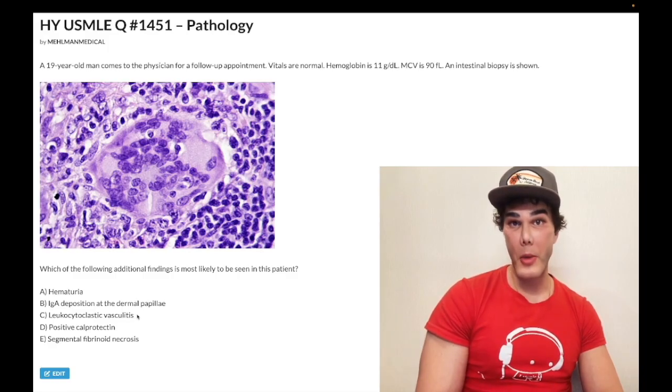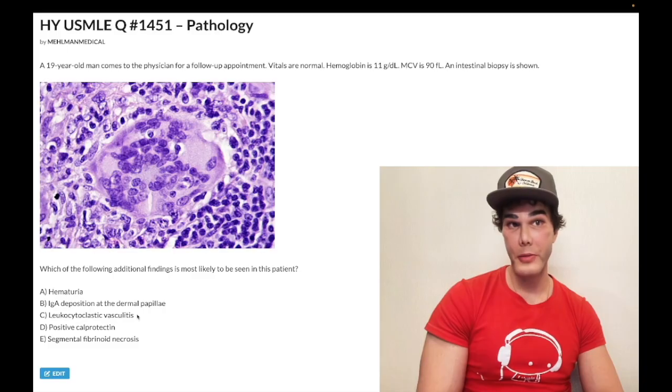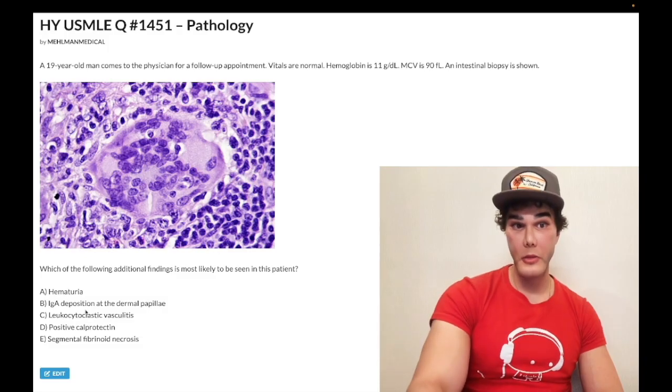So in Henoch-Schönlein purpura, usually pediatrics, you're going to get a tetrad. Number one, palpable purpura, which is your leukocytoclastic vasculitis, where usually nine out of 10 times a URTI, upper respiratory tract viral infection, can sometimes be gastrointestinal. One out of 10 times where students can misconstrue it as hemolytic uremic syndrome, it's not. But usually viral infection, then the whole thing with the IgA deposition in the small vessels, in the buttocks, thighs, and that's your palpable purpura, number one. Number two, it's going to be IgA nephropathy. So IgA deposition, the mesangium in the kidney, you get hematuria, one to three days after your viral infection. Number three, it's going to be arthralgia. Number four, abdominal pain. Wrong answer.